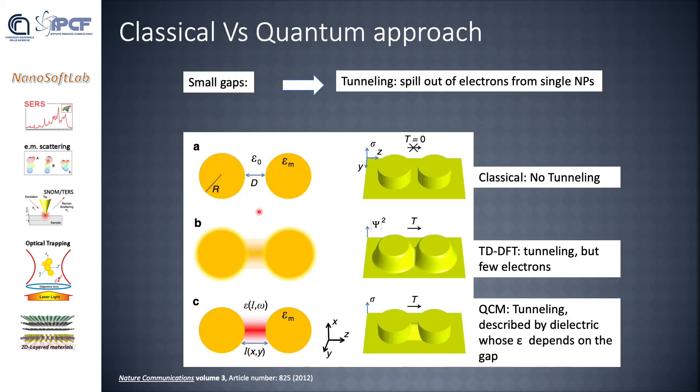At very short distances, typically smaller than one nanometer, tunneling occurs. Tunneling is a sort of spill-out of electrons from a single nanoparticle that goes to the other, and vice versa. The classical theory is not capable of explaining tunneling effects. Theoretical models like time-dependent density functional theory can explain tunneling, but calculations are numerical and time-consuming, and therefore limited to few electrons. In 2012, the group of Javier Aizpurua came up with the idea of describing tunneling with a dielectric constant that depends on the gap between the two nanoparticles. This leads to analytical models that can be applied for calculations and compared to experiments.